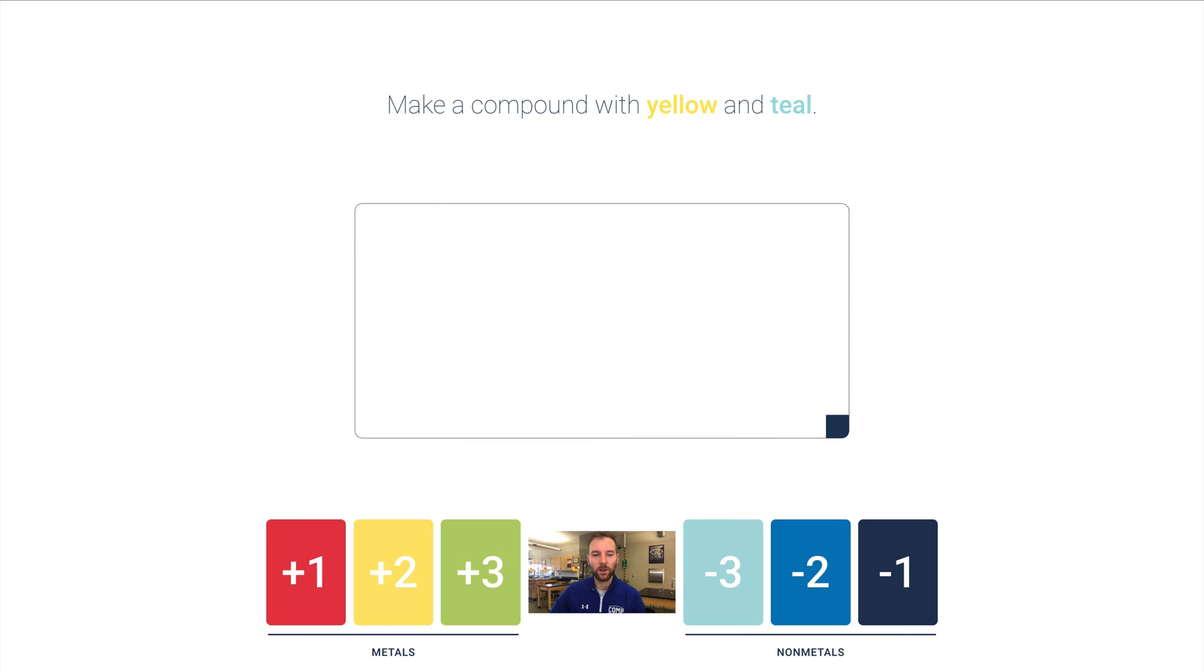Make a compound with yellow and teal. Here's a yellow, here's a teal, right now I have a minus one charge. I add a yellow, that gives me a plus one charge. I add a teal, that gives me a minus two charge. I add another yellow and I'm there. Look, there are three plus twos and two minus threes, so there's kind of a switch thing happening here.